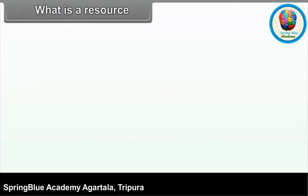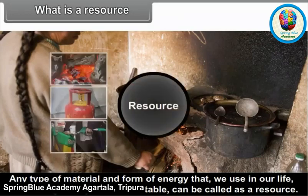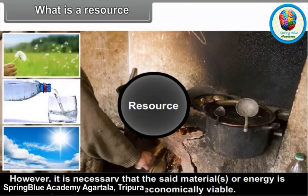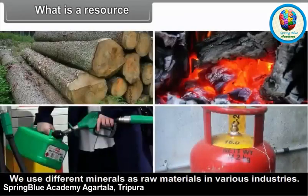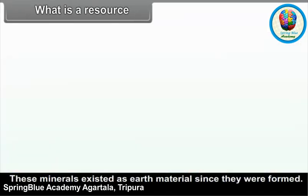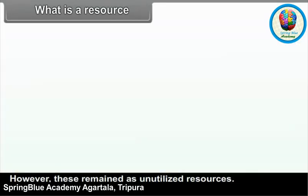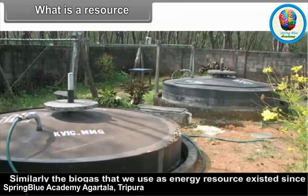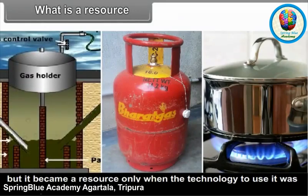What is a resource? Any type of material and form of energy that we use in our life for making it easy and comfortable can be called a resource. However, it is necessary that the said materials or energy is technologically available and economically viable. We use different minerals as raw materials in various industries. These minerals existed as earth materials since they were formed, but they remained as unutilized resources. They became resources only after the appropriate technology was developed. Similarly, the biogas that we use as an energy resource existed since long, but it became a resource only when the technology to use it was developed.